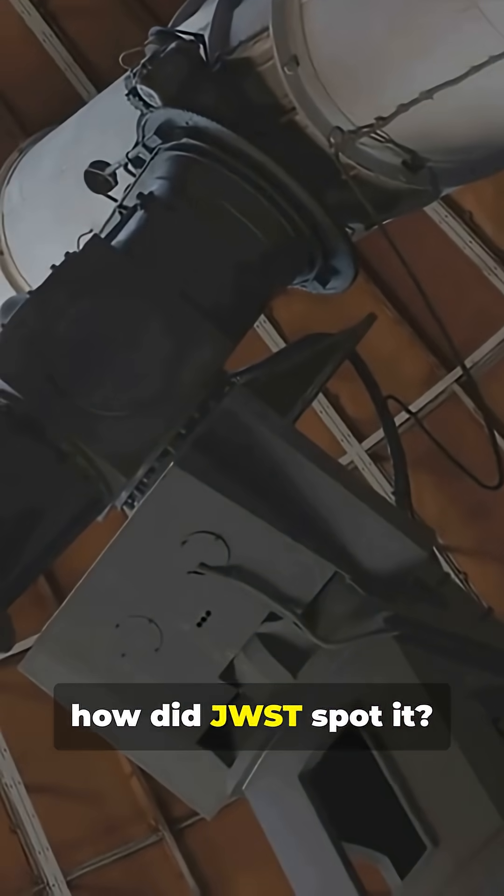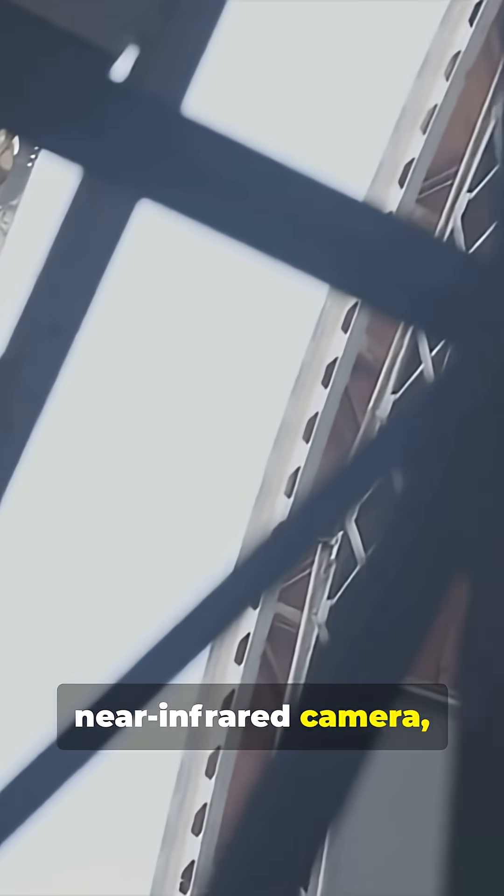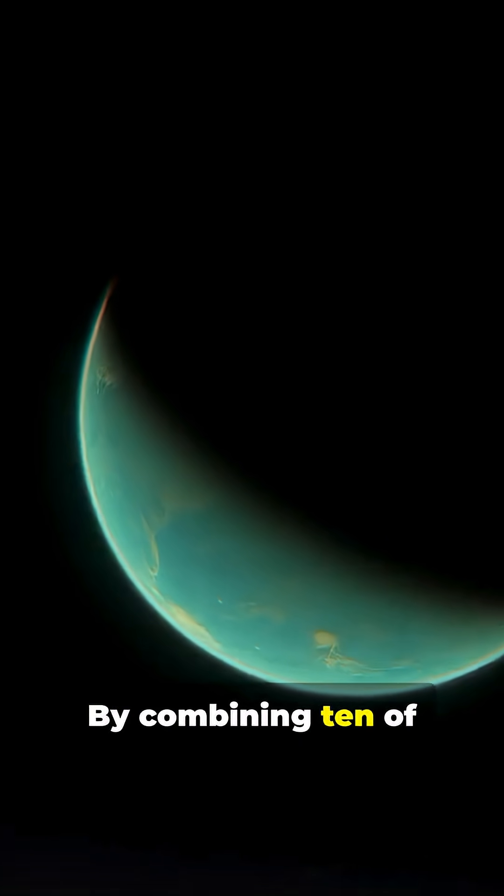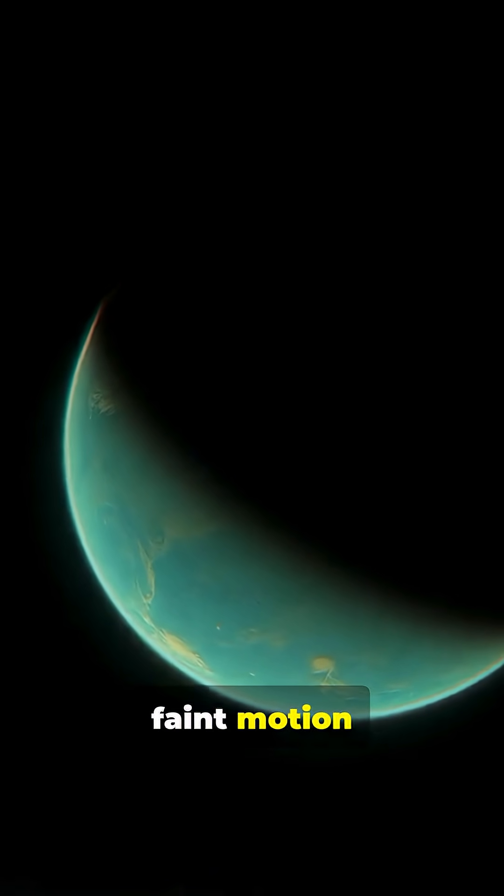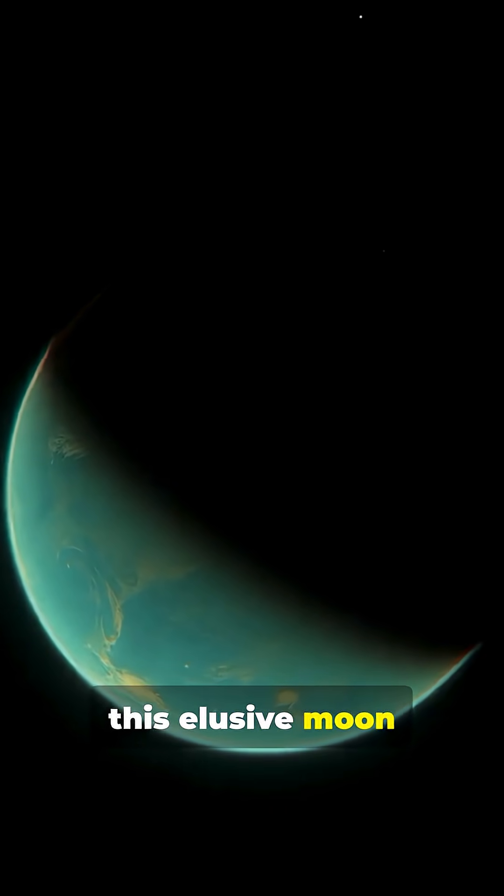So, how did JWST spot it? Astronomers captured a series of long, 40-minute exposures with Webb's near-infrared camera, NIRCAM. By combining 10 of those exposures, faint motion against Uranus' rings became visible, revealing this elusive moon for the first time.